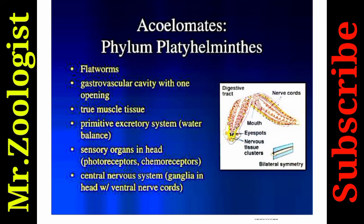In acoelomates, Phylum Platyhelminthes includes flatworms. They have a gastrovascular cavity with one opening, true muscle tissue, a primitive excretory system for water balance, sensory organs in the head including photoreceptors and chemoreceptors, and a central nervous system with ganglia in the head and ventral nerve cords.